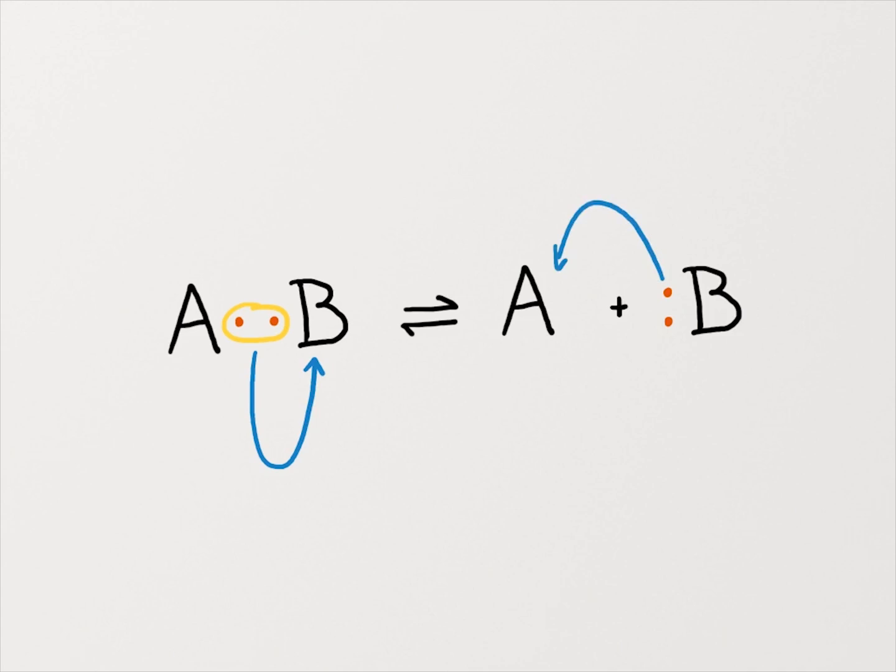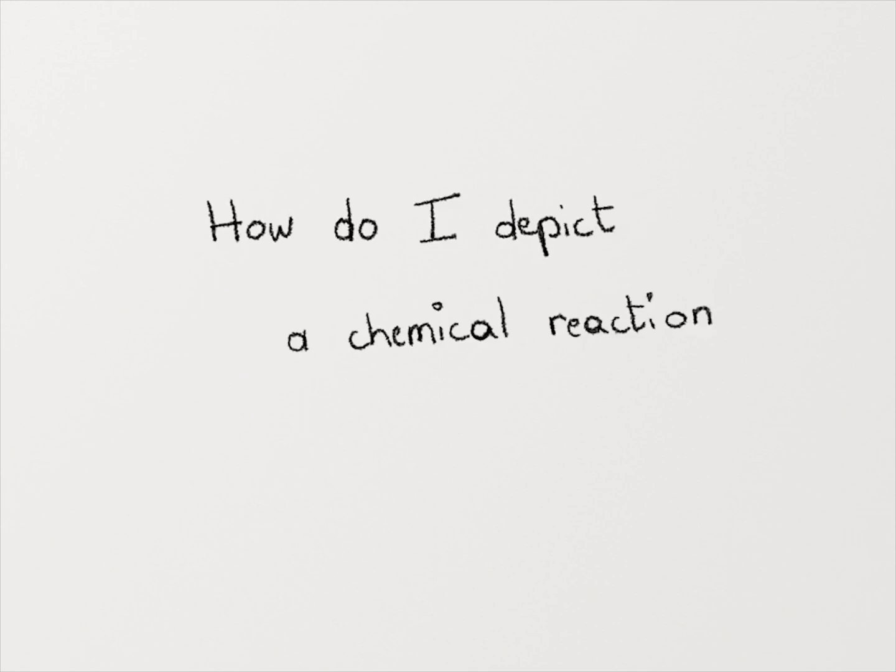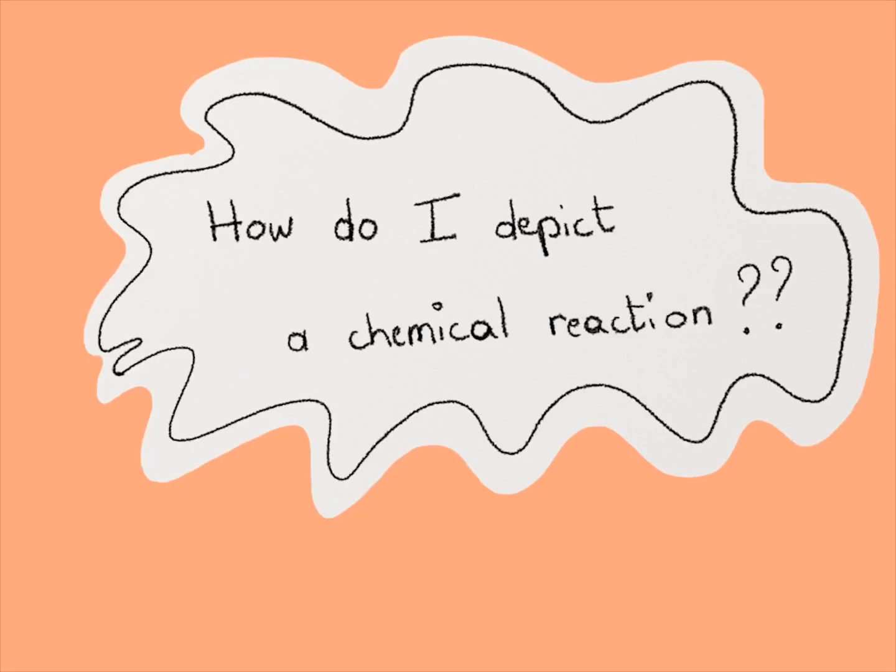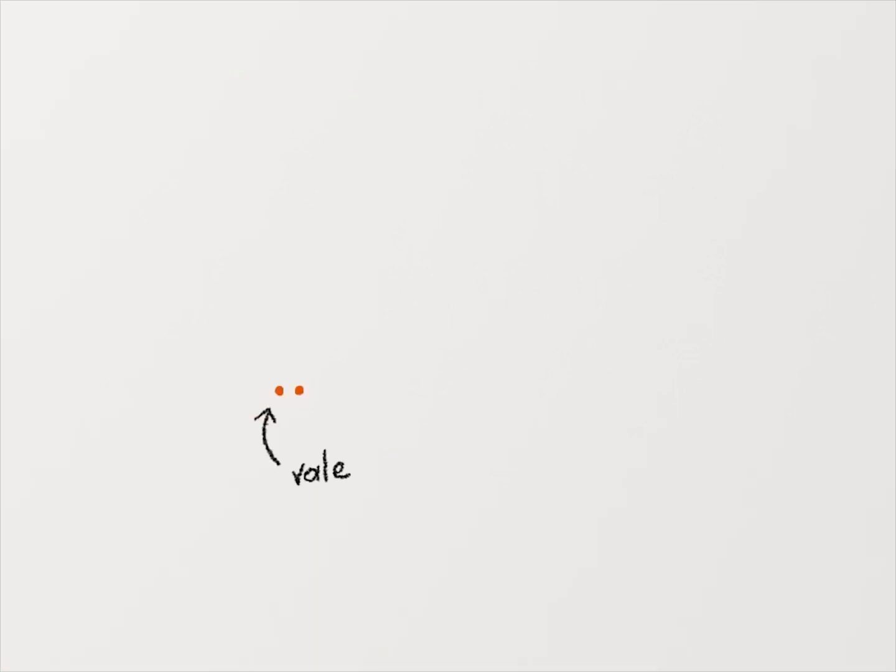Okay, so if it's a description, how do I depict a chemical reaction then? Well, we can only really depict specific steps in a chemical reaction. We do that by tracking the movement of these valence electrons that are associated with each individual step.